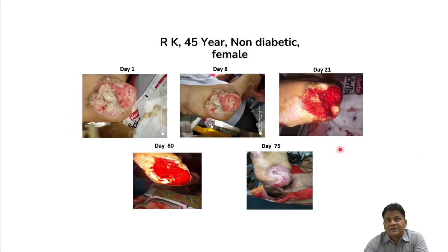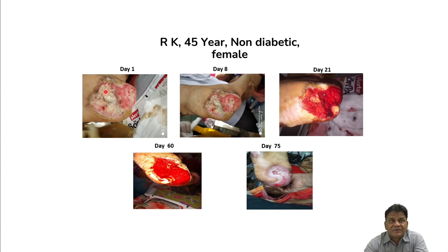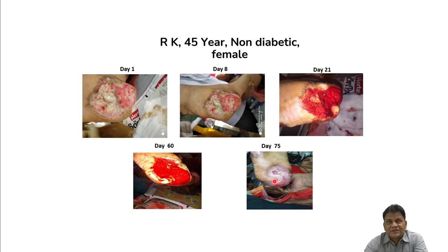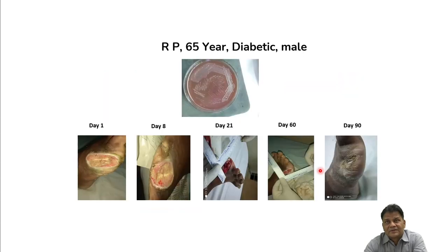I am showing representative cases. A non-diabetic female had significant slough and dead debris before treatment. By day 21, healthy granulation tissue replaced the infected material, wound margins had started healing. By day 75, only a small area of the wound remained. Another case showed complete healing from day one to day 90. All these cases had failed conventional therapy for at least three months before coming to us.